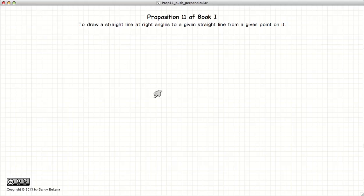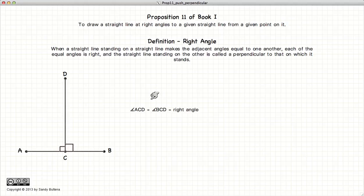So before we begin we shall refresh our memory of the definition of a right angle. If we have two lines AB and CD, if the angles ACD and DCB are equal then they are by definition a right angle.